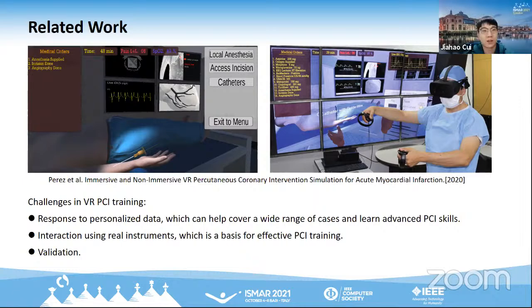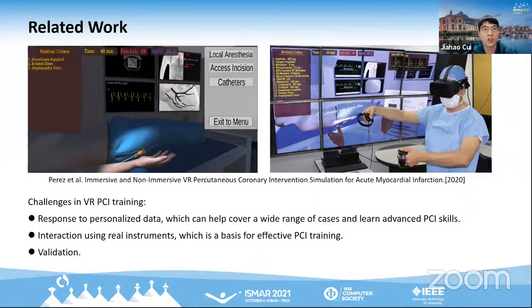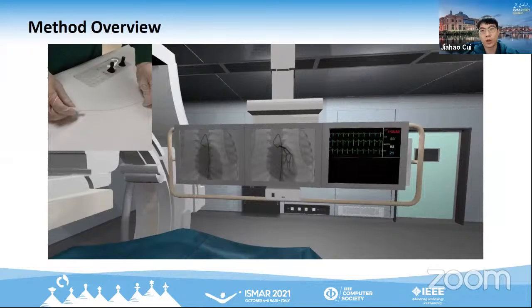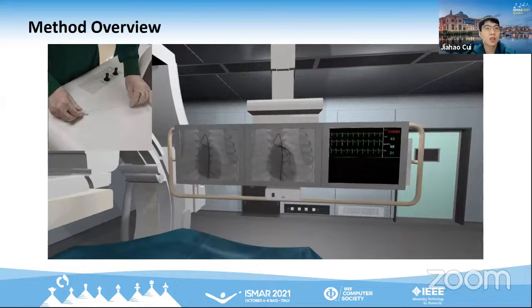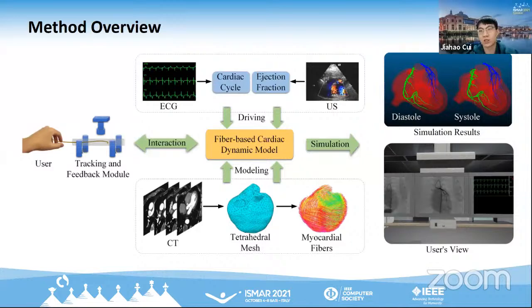Our system can directly take patient-specific data as input and generate virtual 3D intervention scenarios. We develop tracking and feedback hardware for real PCI instruments. The key components are a fiber-based cardiac dynamic model and a tracking feedback module. The dynamic model can be established based on CT data and driven by ECG and ultrasound data. I will focus more on our evaluations and findings; details of the fiber-based model can be discussed in GatherTown.